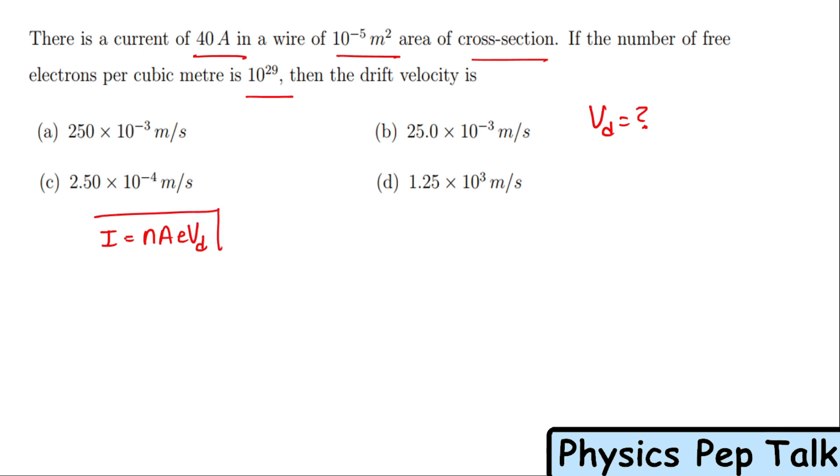This is one important equation in this chapter. From this I can write drift velocity vd = i/(nAe). The value of i is 40 amperes. Number of electrons is 10²⁹. Area is 10⁻⁵ m².